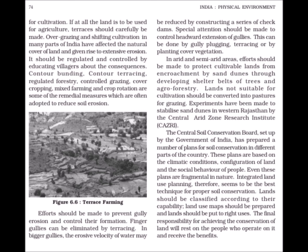The Central Soil Conservation Board set up by the Government of India had prepared a number of plans for soil conservation in different parts of the country. These plans are based on the climatic conditions, configuration of land and the social behavior of people. Even these plans are fragmental in nature. Integrated land use planning therefore seems to be the best technique for proper soil conservation. Lands should be classified according to their capability, land use maps should be prepared and lands should be put to right uses. The final responsibility for achieving the conservation of land will rest on the people who operate on it and receive the benefits.